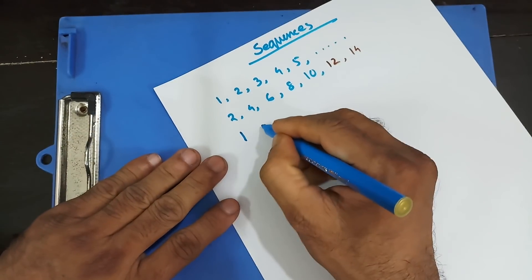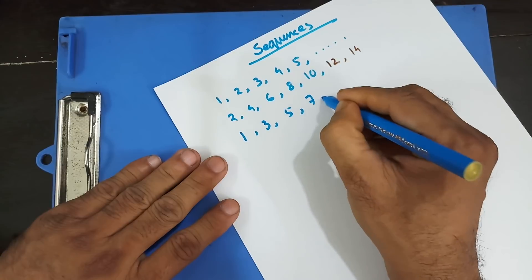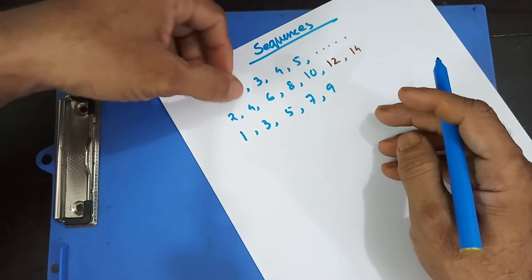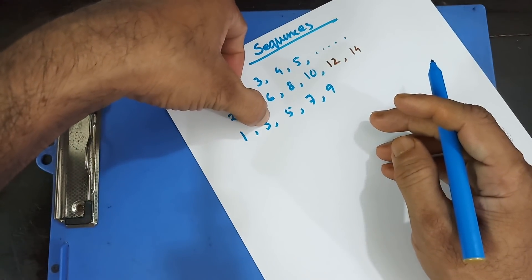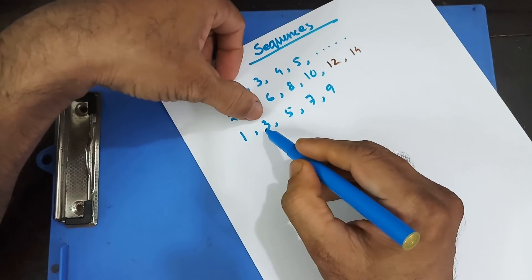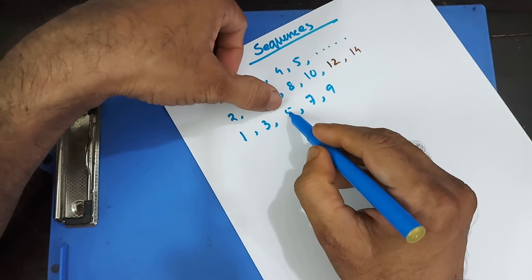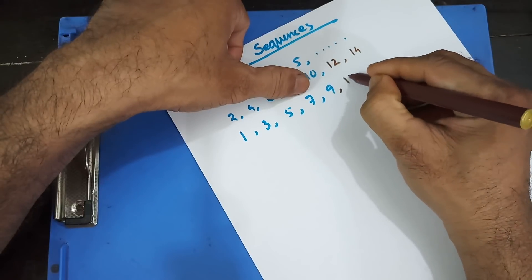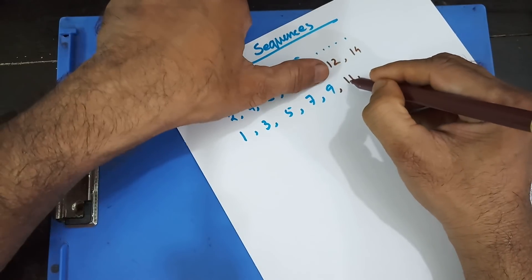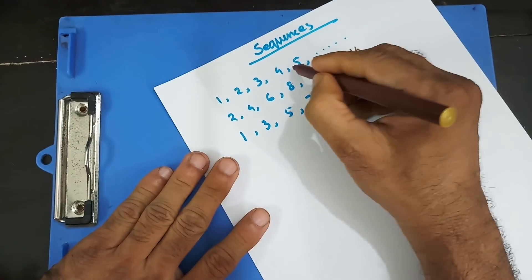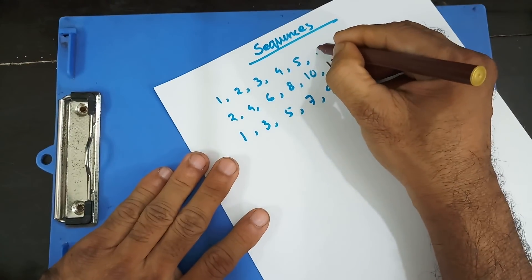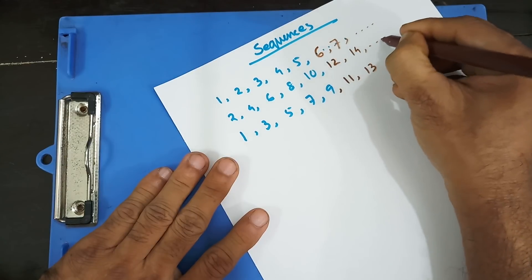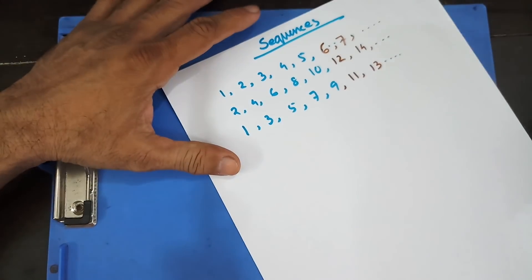If you have 1, 3, 5, 7, 9, this is also a pattern of numbers that follows a rule. That rule says each number is 2 more than the previous number: 1 plus 2 is 3, 3 plus 2 is 5, 5 plus 2 is 7. So I can find out the next two numbers: 11 and then 11 plus 2 is 13. These are examples of sequences.